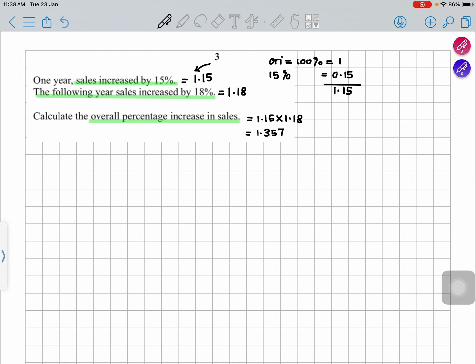And then they will remove the 1, the original amount, which is the 100%, and it will give us 0.357. When you convert into a percentage, because we want the overall percentage, you can write it as 35.7%, which is your final answer.